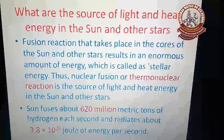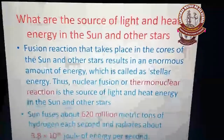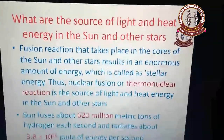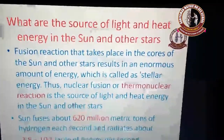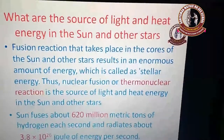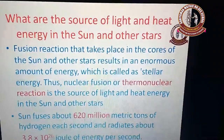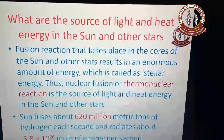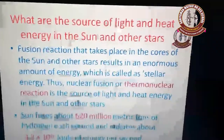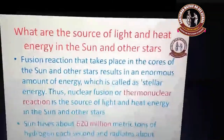How much energy can be emitted by the Sun? The Sun fuses about 620 million metric tons of hydrogen per second. During this nuclear fusion reaction, we get 3.8 × 10²⁶ joules of energy per second. This energy is called stellar energy.